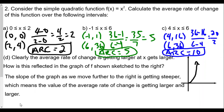We can estimate this visually: the interval from 4 to 6 has a much steeper slope than from 0 to 2. As we move further to the right, the slope between the points gets steeper and steeper, giving us a higher average rate of change value.